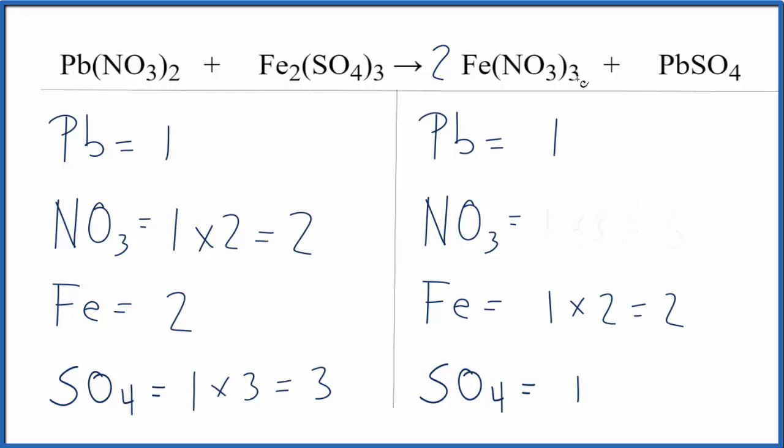And then for the nitrates, I have the 3 times the 1, so I have 3 nitrates, and 2. This 2 goes to everything here. So 2 times the 3 nitrates, that gives me 6 nitrates.